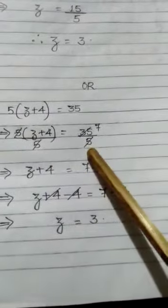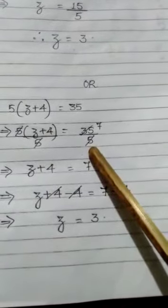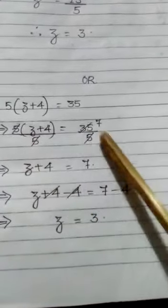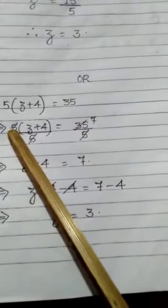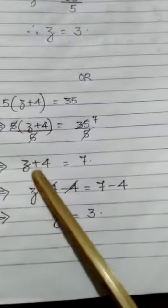So here by 5, if I divide on both the sides, the factor 5 on the left hand side can be removed, then only z plus 4 will remain. You can see here in the step.